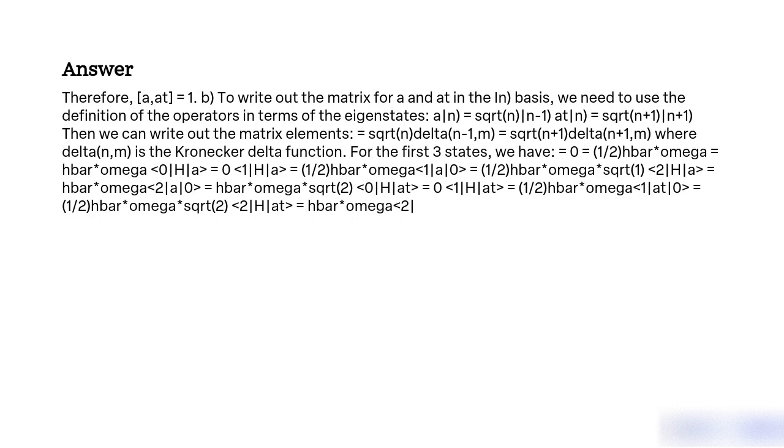For the first three states, we have: ⟨0|H|0⟩ = (1/2)ℏω, ⟨1|H|1⟩ = (1/2)ℏω, ⟨2|H|2⟩ = ℏω. The matrix elements are: ⟨0|a|1⟩ = (1/2)ℏω·√2, ⟨1|a|0⟩ = (1/2)ℏω·√2, ⟨0|a†|1⟩ = (1/2)ℏω·√2, ⟨2|a|0⟩ = ℏω·√2, ⟨0|a†|2⟩ = ℏω·√2, ⟨1|a†|0⟩ = (1/2)ℏω·√2, and ⟨2|H|2⟩ = ℏω.